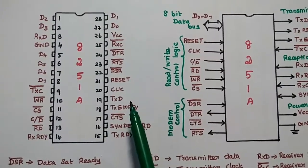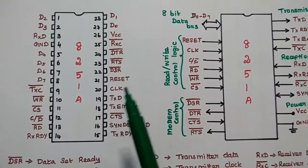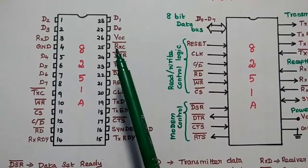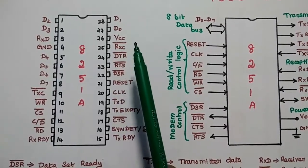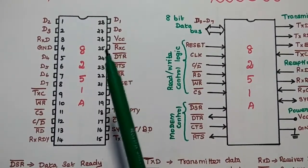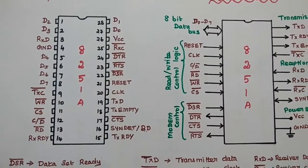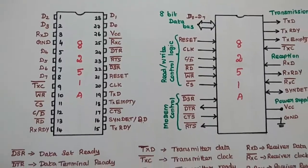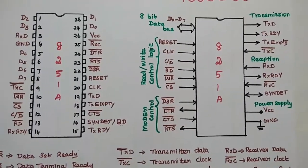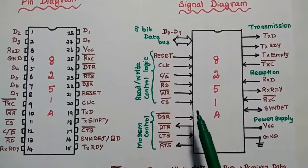Since we are talking about serial communication, we need a modem. The next pin is VCC, which is the power supply signal. This is the pin diagram and signal diagram of the 8251A.